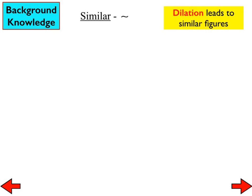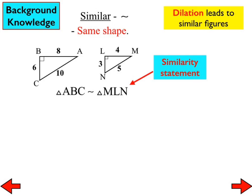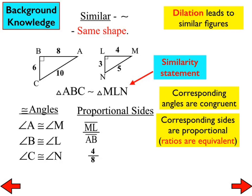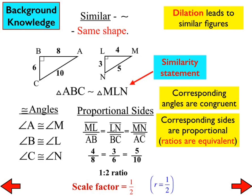A little bit of background knowledge. Similar figures and dilations have a lot to do with each other. Dilation leads to similar figures. We deal with similarity statements that tell us the relationship between the two, and when we have similar figures or dilations, corresponding angles are congruent and corresponding sides are proportional to each other.